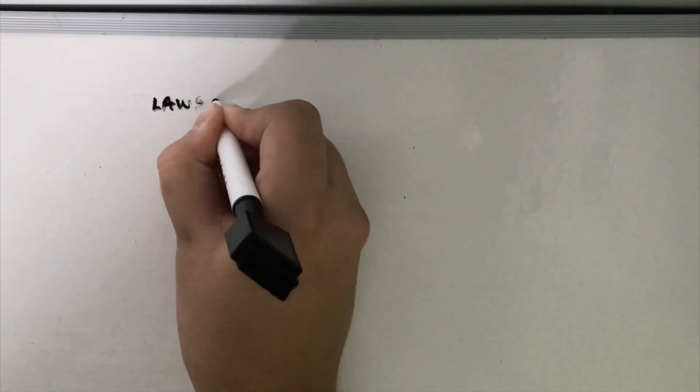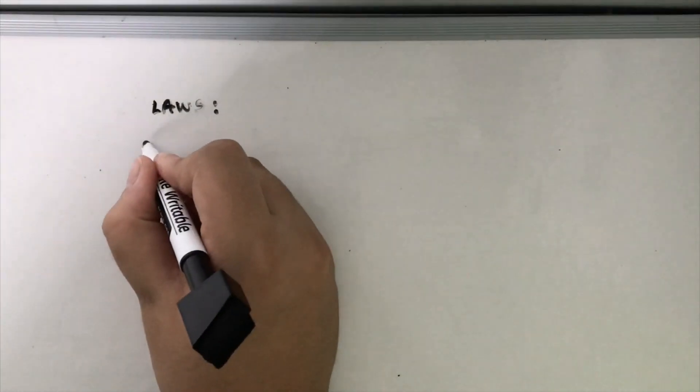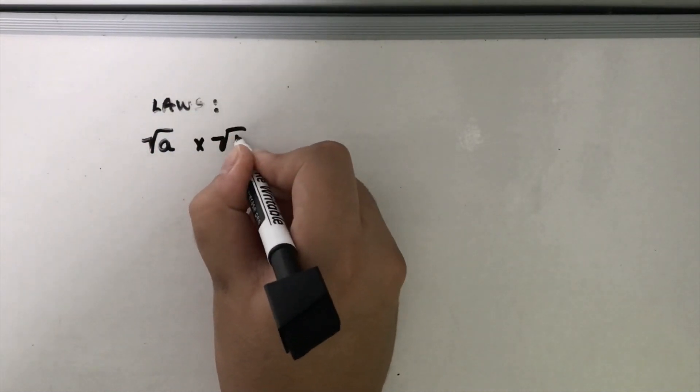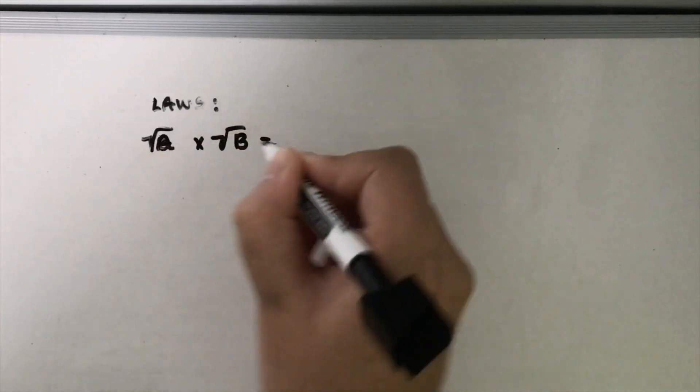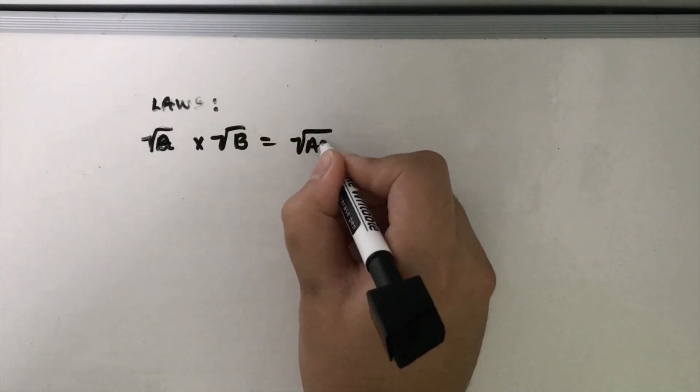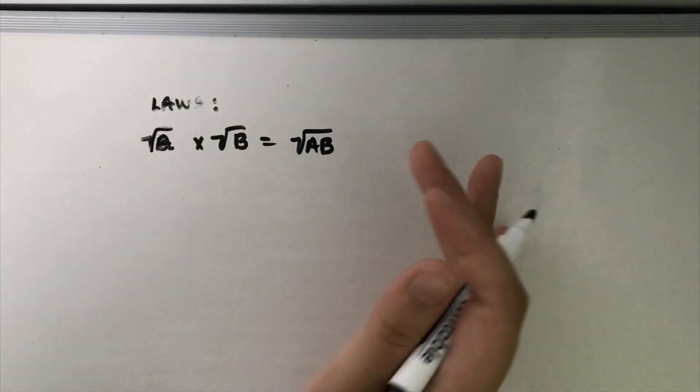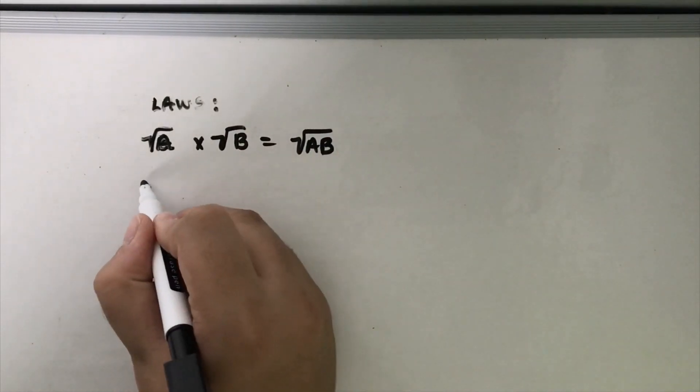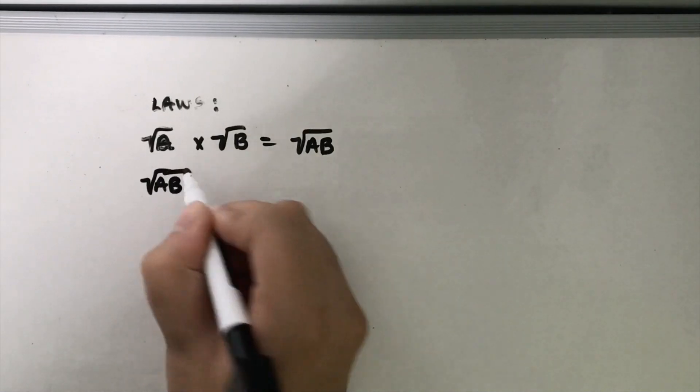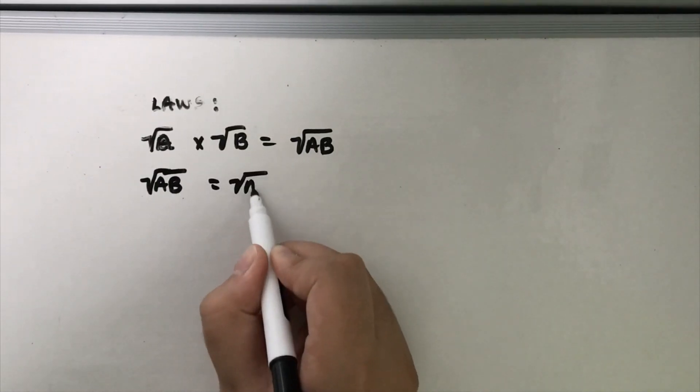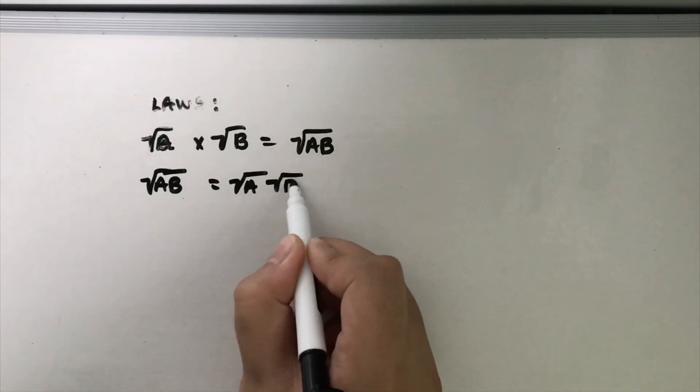There are two main laws that you need to remember and know when it comes to surds. The first law is root A times root B equals root AB, and this can also be used backwards so you can simplify a surd by using the equation root AB becomes root A times root B.